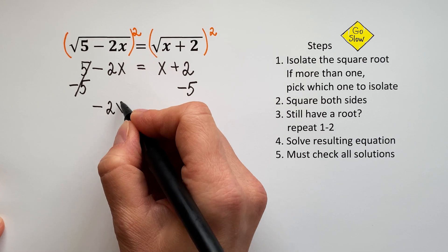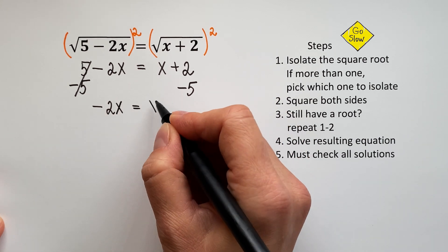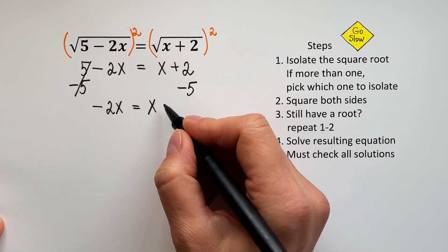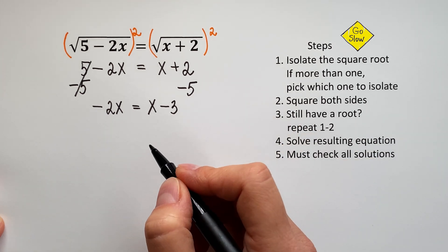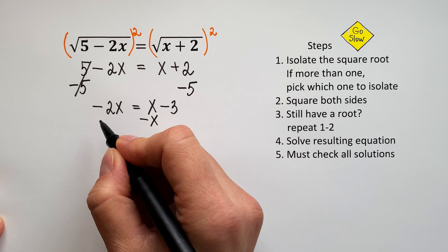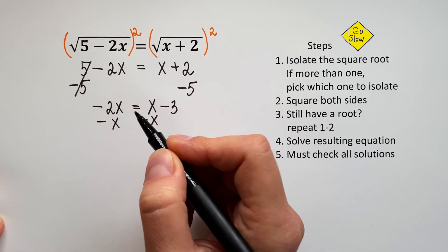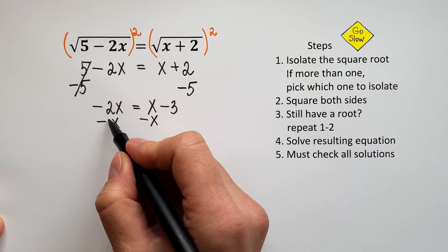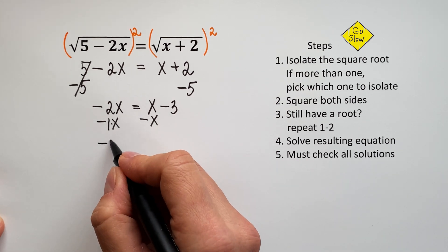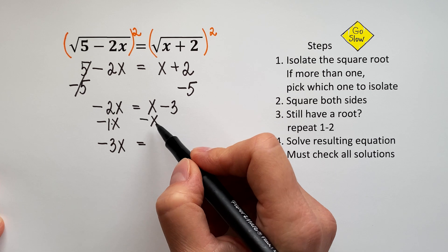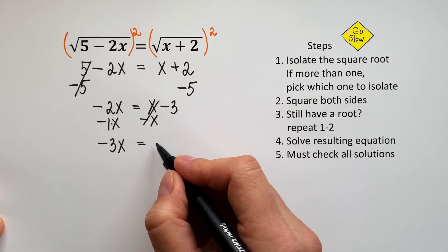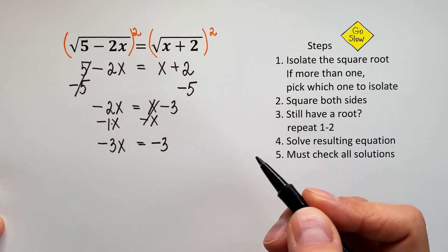We will have negative 2X equals X, and then 2 minus 5 will be negative 3. Very good! What do we do next? We subtract X from both sides in order to keep it on the left. Negative 2X minus 1X will give us negative 3X. Then X minus X will give us 0, and then we will have negative 3.